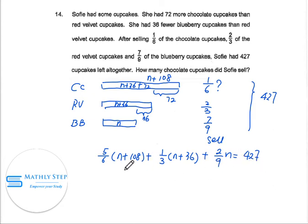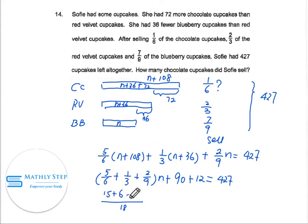So we need to simplify this equation, and there is only one variable, which is N. Definitely we can find out N. So we put all the N together. This is five-sixths plus one-third plus two-ninths of N, equal to five-sixths times 108, equal to 90, plus 12, equal to 427. And all this added up together is 18.